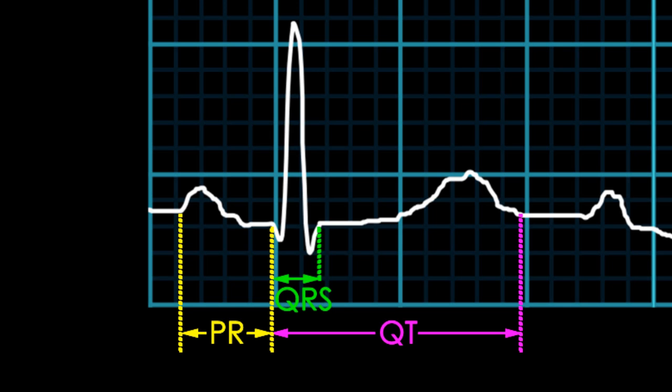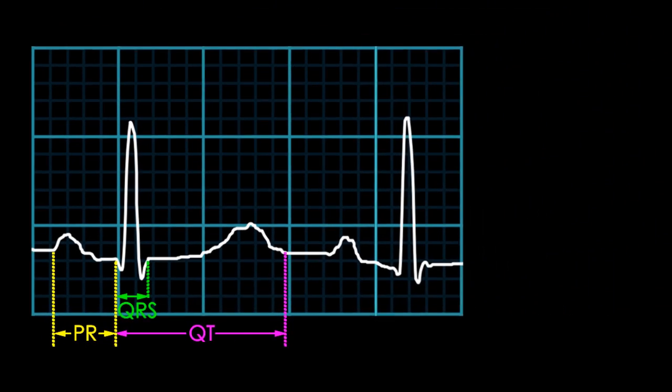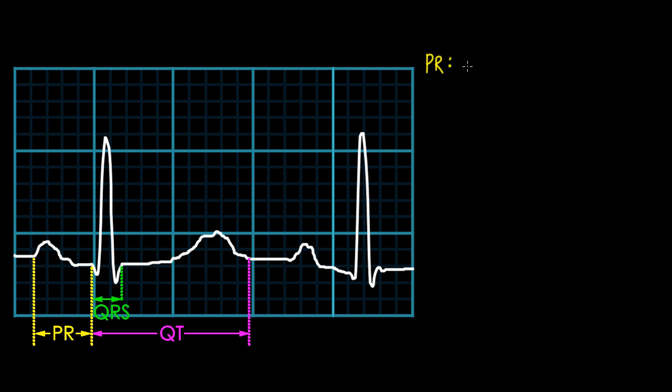Note that it's not necessarily measured to the R wave, but rather to the beginning of the QRS complex. So if the QRS starts with the Q wave, you just measure it to there. A normal PR interval is between 0.12 seconds to 0.20 seconds in duration. In other words, it's between three small boxes in width to five small boxes in width.